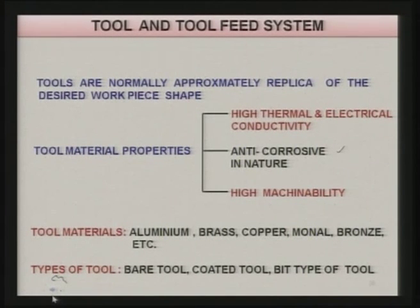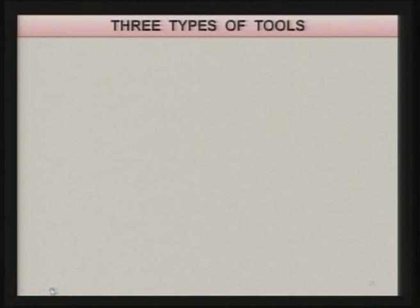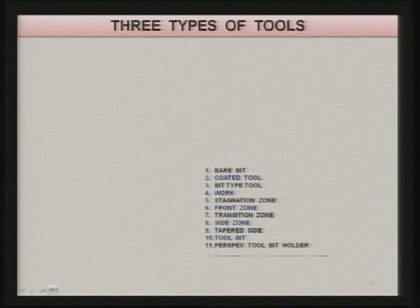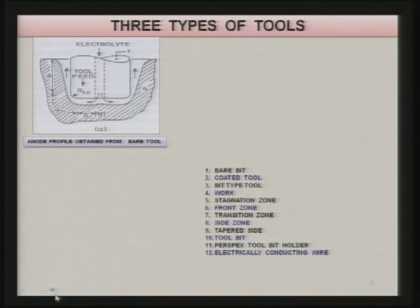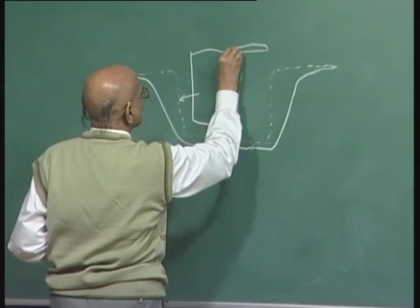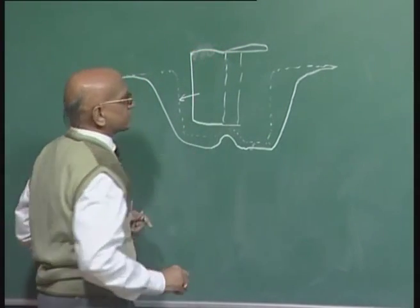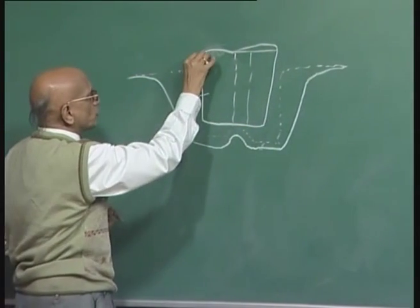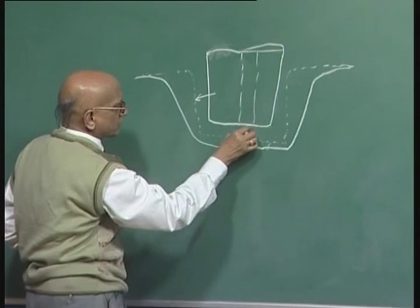There are three types of tools in practice: the bare tool, the coated tool, and the bit-type tool. The bare tool anode profile is important — the tool is bare, meaning it is not coated on the sides or the bottom part of the tool.